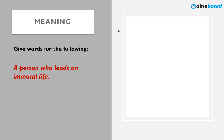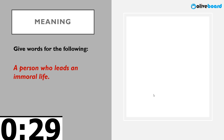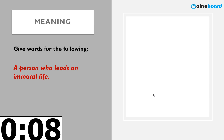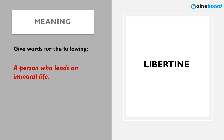Next: a person who leads an immoral life. The correct word is libertine. You can remember it with the help of liberty — someone who takes all the freedom in the world, who lives in a way that is particularly not moral, not considered correct.